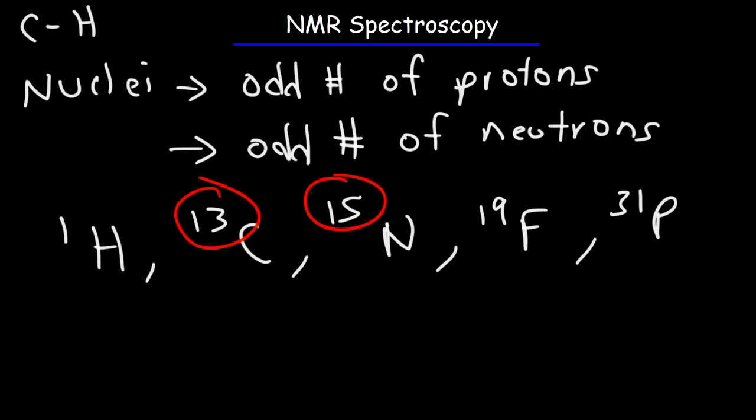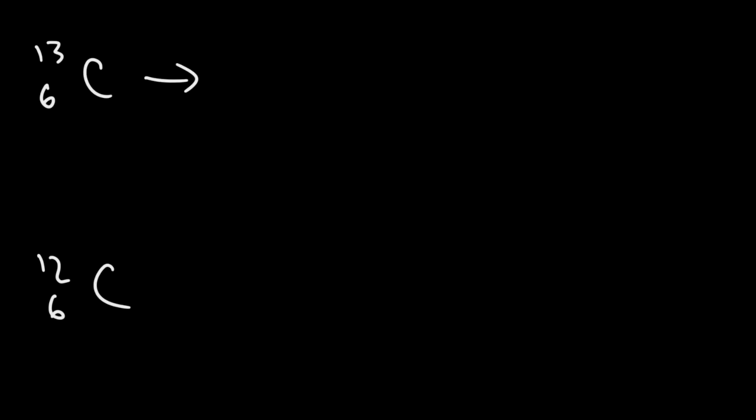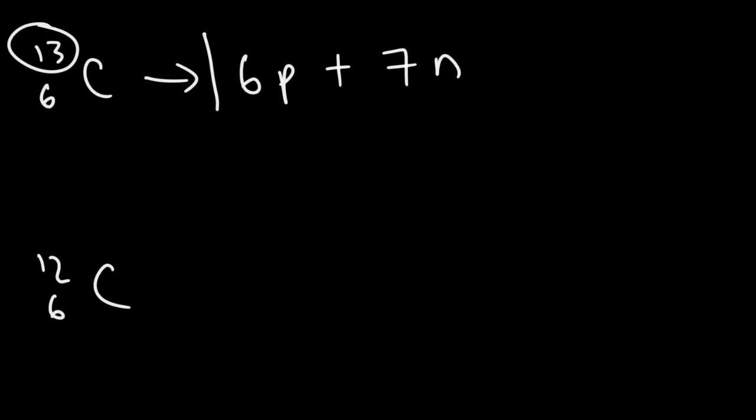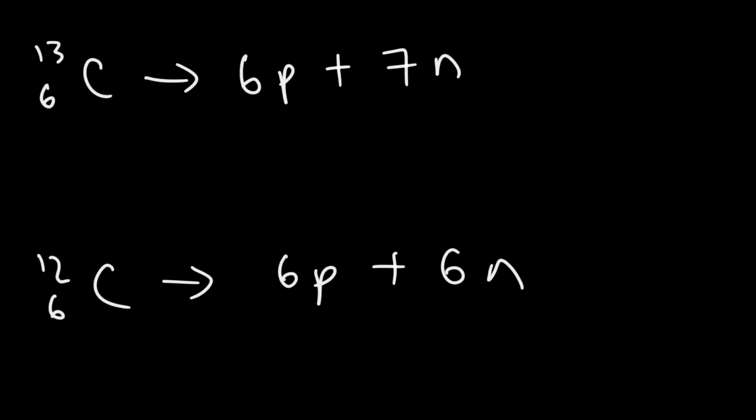The mass number is the sum of the protons and the neutrons. So let's take a look at carbon-13. Carbon-13 can work with NMR spectroscopy, but carbon-12 cannot. Every atom of carbon has an atomic number of 6, which represents the number of protons. So carbon-13 has 6 protons and 7 neutrons — the mass number 13 is the sum of the protons and neutrons. Carbon-12 has 6 protons and 6 neutrons.